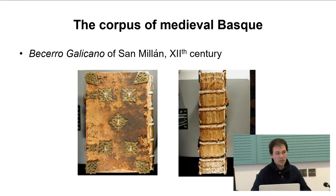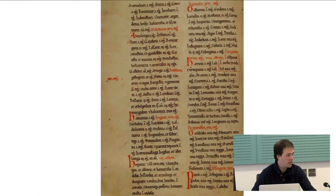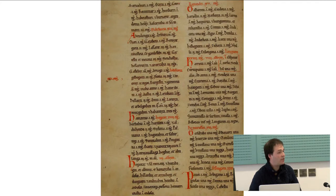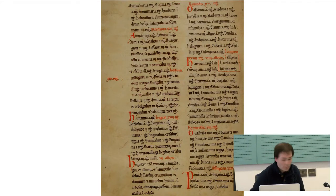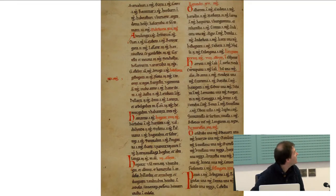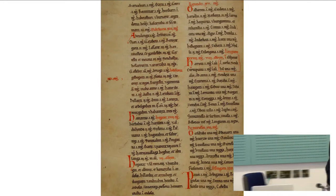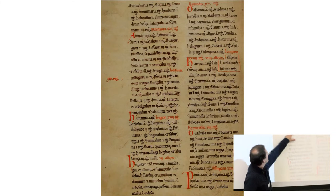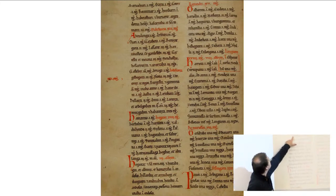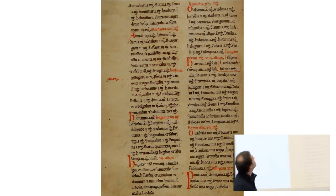You can see what kind of documents they are. This cartulary exemplifies clearly the nature of most medieval data: they are written in Latin or Romance, and then you have Basque place names or person names — these are Basque names.